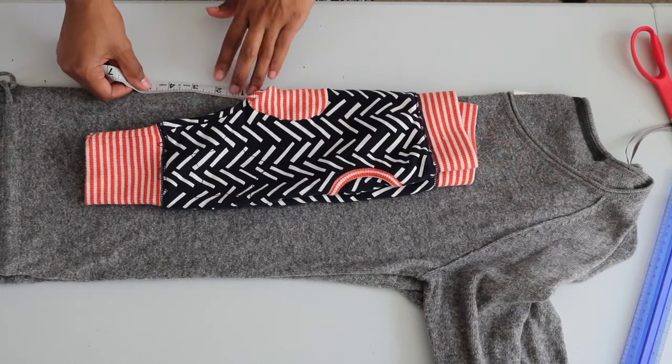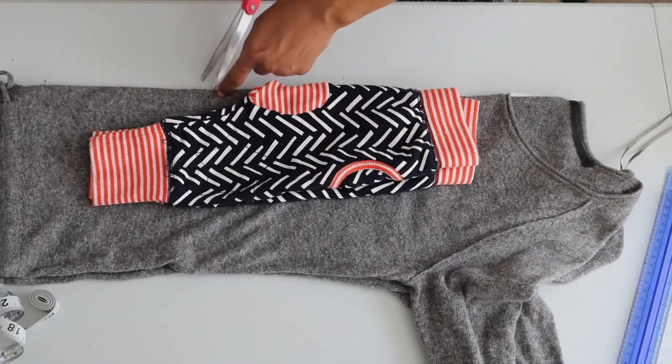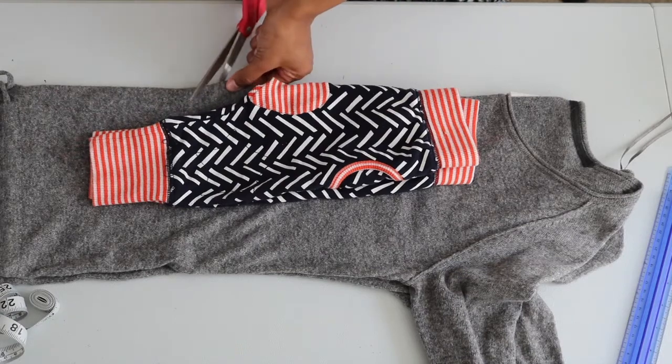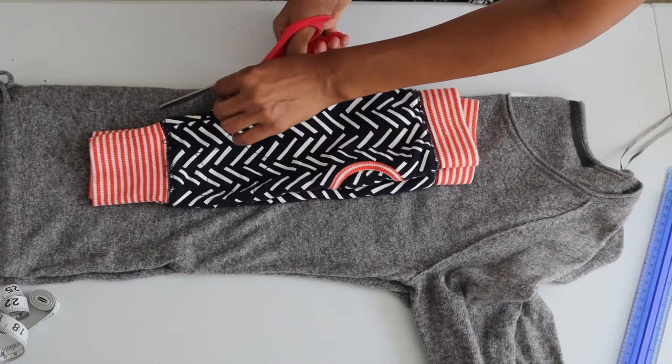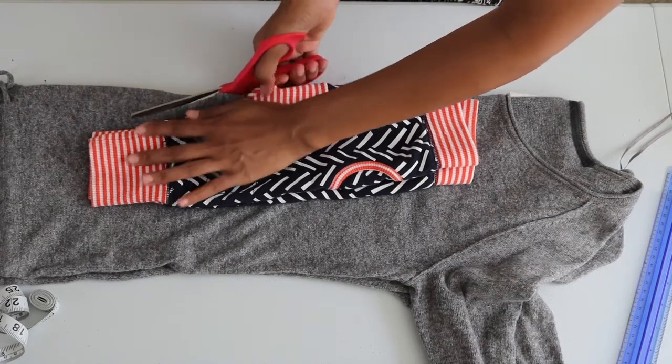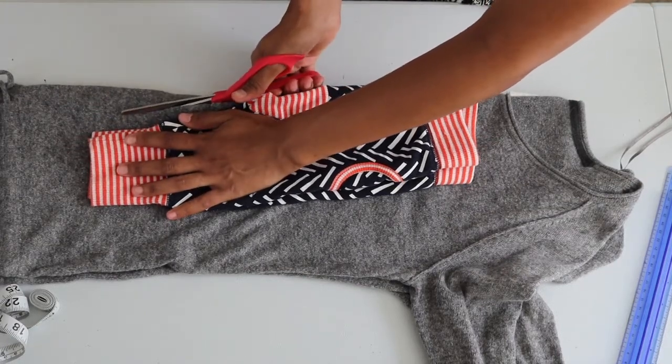Then I dropped the crotch down two inches. From that point I started to cut, making sure to add at least one-fourth inch to half inch seam allowance as I continued cutting around the pant.